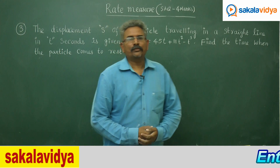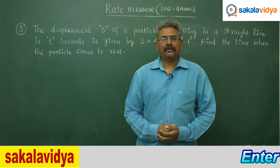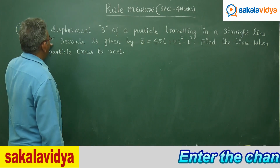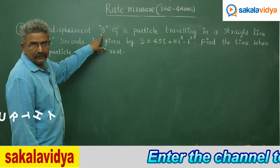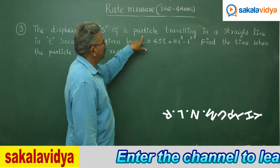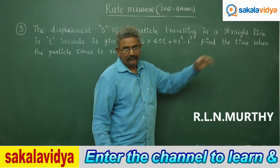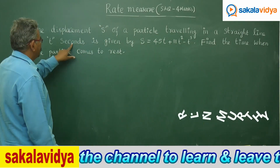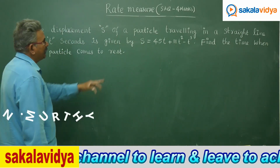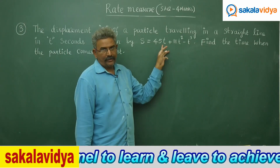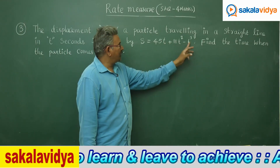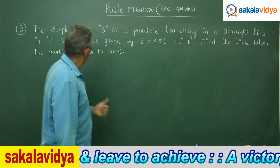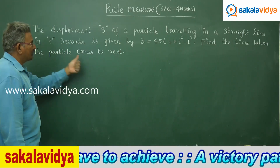Let us solve one more problem on rate measure. The displacement S of a particle travelling in a straight line in t seconds is given by s = 45t + 11t² - t³. Find the time when the particle comes to rest.